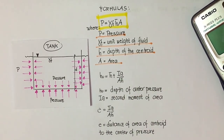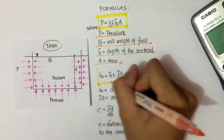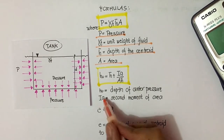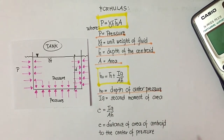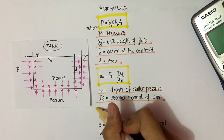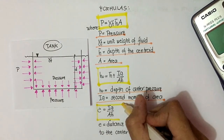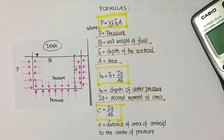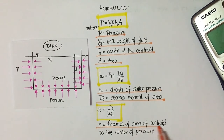The second formula is used to find the depth of the center of pressure. Depth of center pressure HO is equal to H-bar plus I-G over area multiplied by H-bar, where I-G is the second moment of area. The third formula gives the distance from the centroid to the center of pressure, equal to I-G over area multiplied by H-bar.